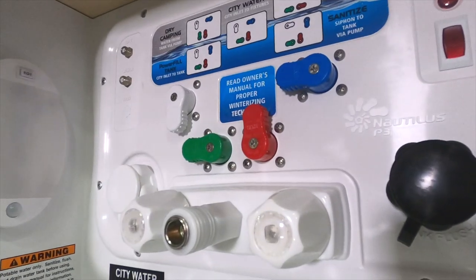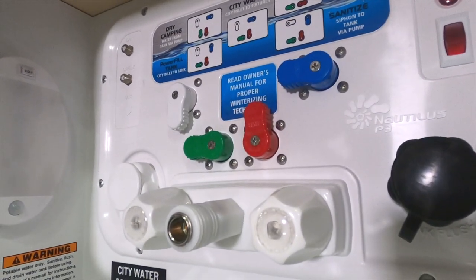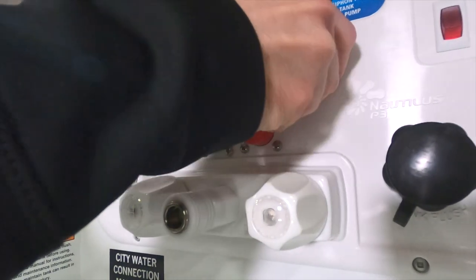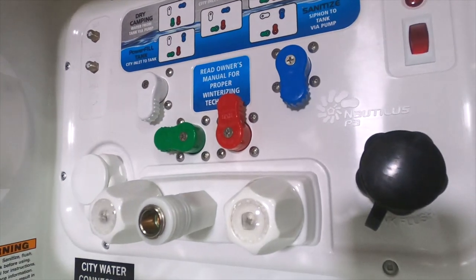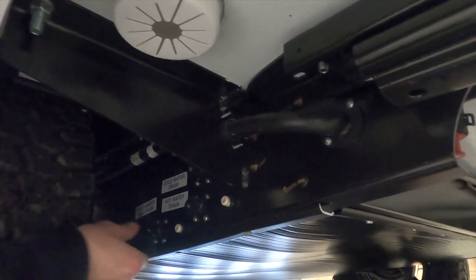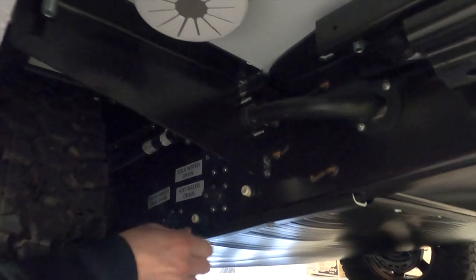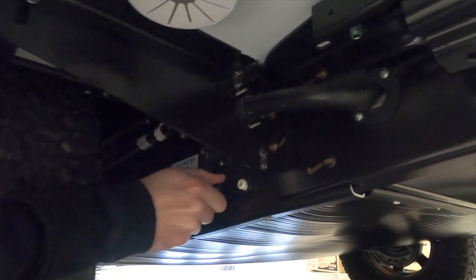The first thing you want to do is put the Nautilus into power fill mode using the key on the sticker. Next, you'll want to open your freshwater tank drain valve as well as the hot and cold low point drain valves to let any liquid drain out.